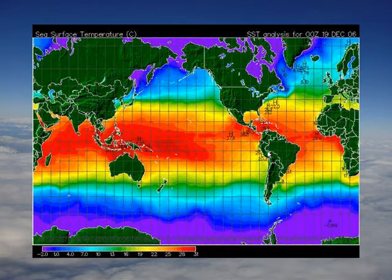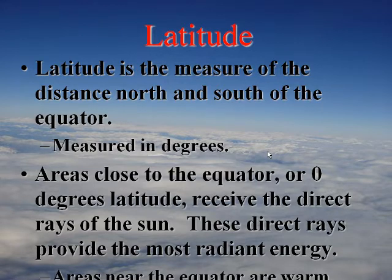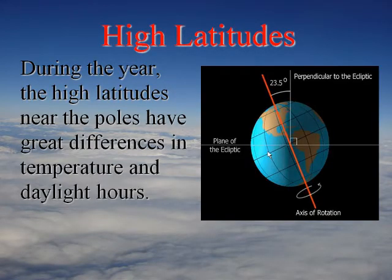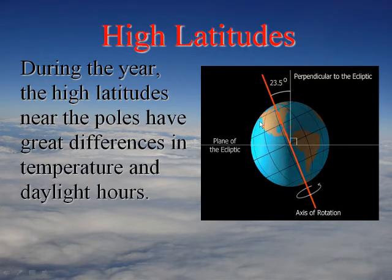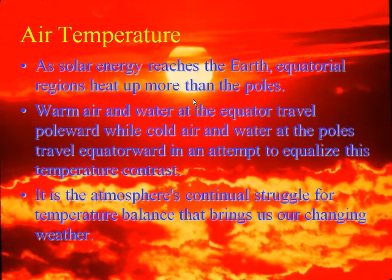Sea surface temperature follows expected patterns from what we know about latitude. Higher latitudes see bigger differences in temperature, climate, and daylight hours. Places like Alaska and the North Pole get less daylight, especially approaching winter. Energy from the Sun heats the equator more than the poles, so warm air and water move toward the poles while cold air and water move toward the equator.